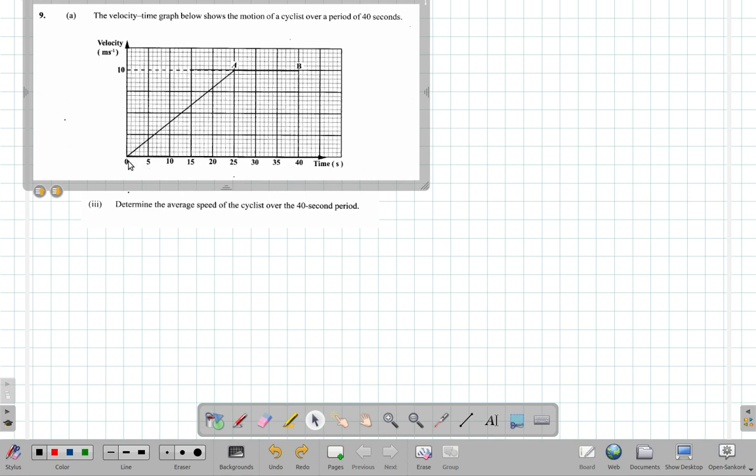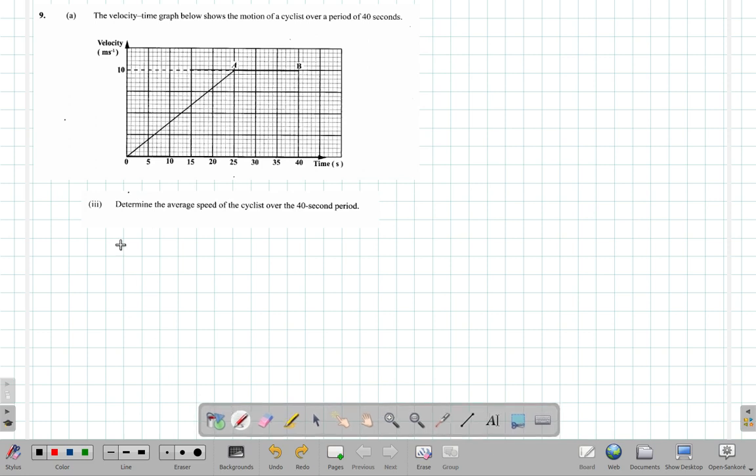Now you have constant acceleration between 0 and 25 seconds, and then constant speed from 25 to 40 seconds. Remember, first of all there's a formula telling you that speed is equal to distance divided by time.